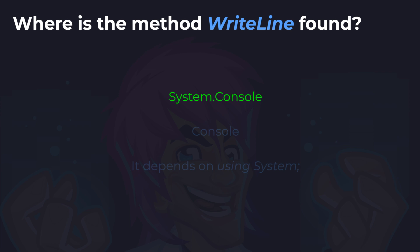The method is always found in System.Console — that's where it exists. The using directive simply allows your code a shorthand way to quickly reference Console without always having to specify System.Console. However, the method is still always found and exists in System.Console. Remember that, because it's important if somebody asks you where a method is found. You have to understand that adding the 'using System' directive is just a shorthand way of accessing that location.